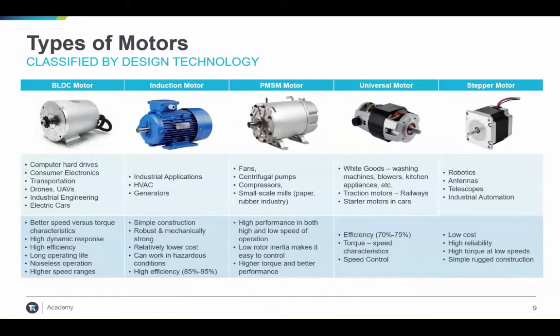Here are the various types of motors classified by design technology. BLDC motors are used in consumer electronics and drones and offer higher speed ranges and efficiencies. Induction motors are used in industrial applications and are mechanically robust, able to work in hazardous conditions. PMSM motors are usually found in fans and compressors and offer higher torque and better performance. Universal motors are used in white goods, and stepper motors are used in robotics and industrial automation — low cost, reliable, with a simple and rugged construction.